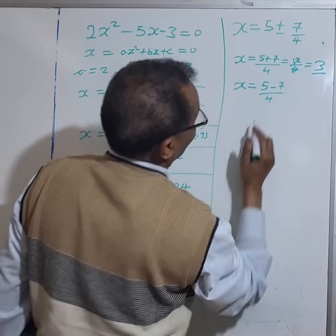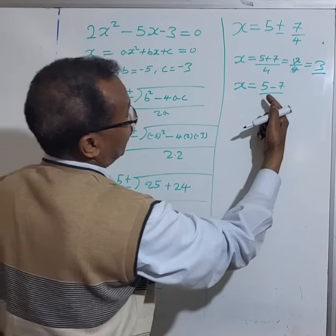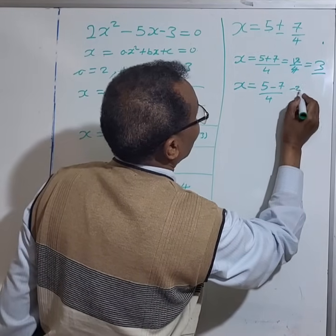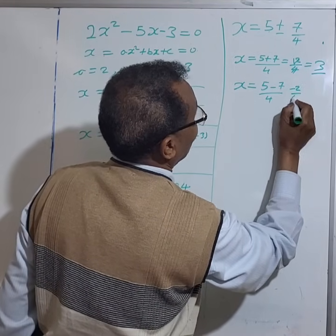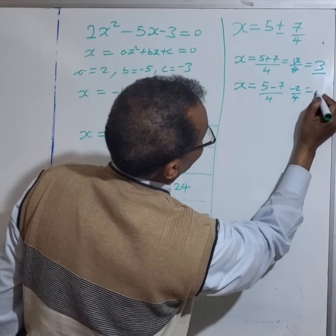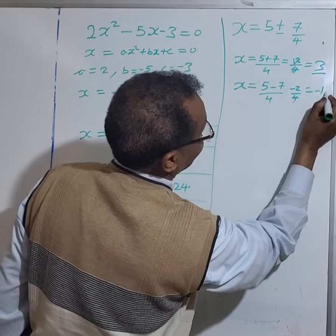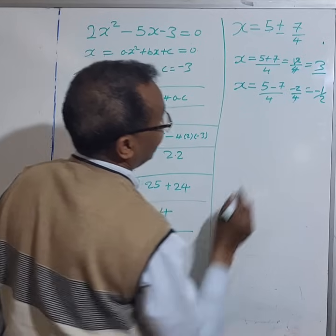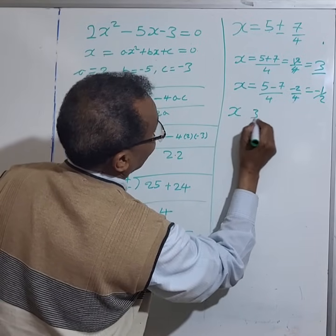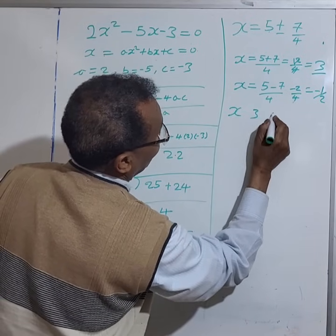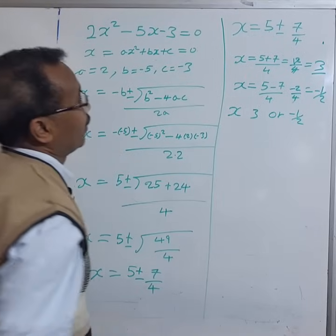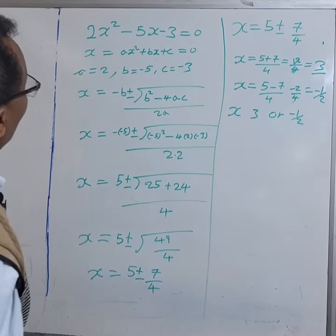So 5 plus 7 is 12 over 4 which is 3. And 5 take away 7 is negative 2 over 4, so if you simplify that it gives you negative half. So our x is 3 or negative half.